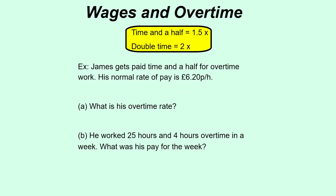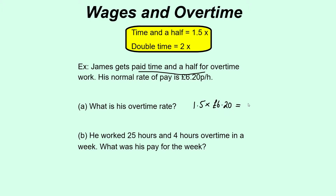The working for this pretty much stays the same for any overtime questions — you're looking at the same kind of idea, just different numbers. So James gets paid time and a half for overtime work. His normal rate of pay is £6.20 per hour. What is his overtime rate? He's paid time and a half, which is 1.5 times his normal rate, so it's 1.5 times £6.20. Half of £6.20 is £3.10, so adding that on gives £9.30 per hour — that's his overtime rate.